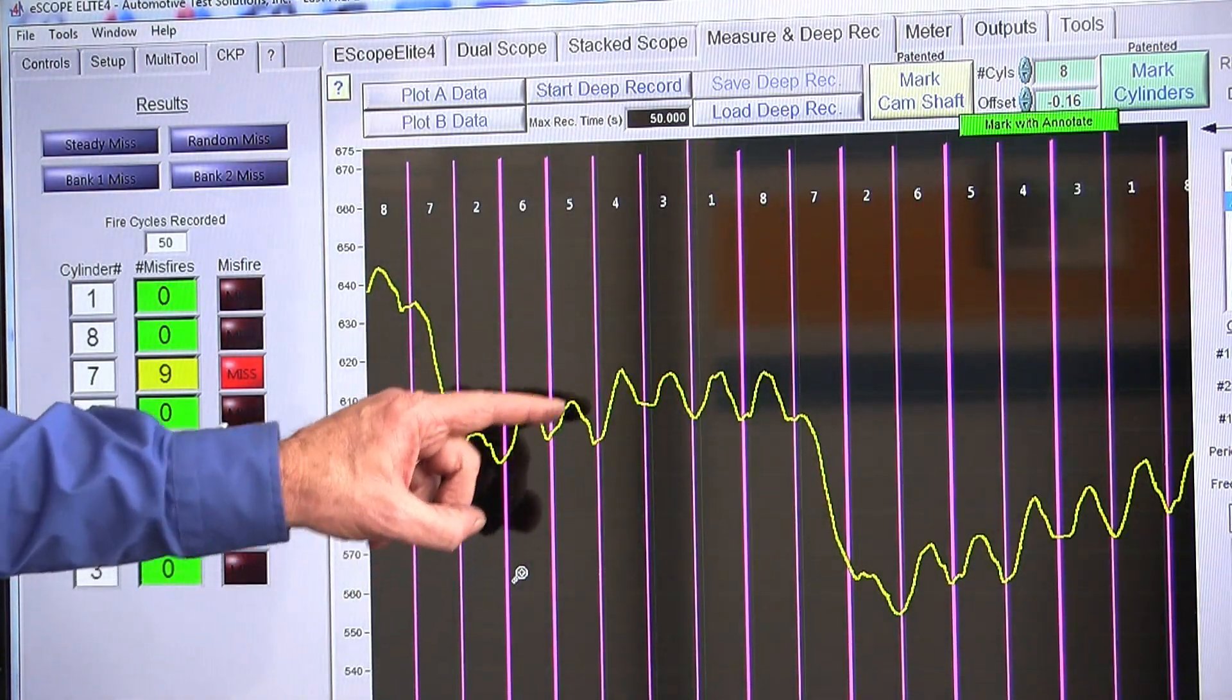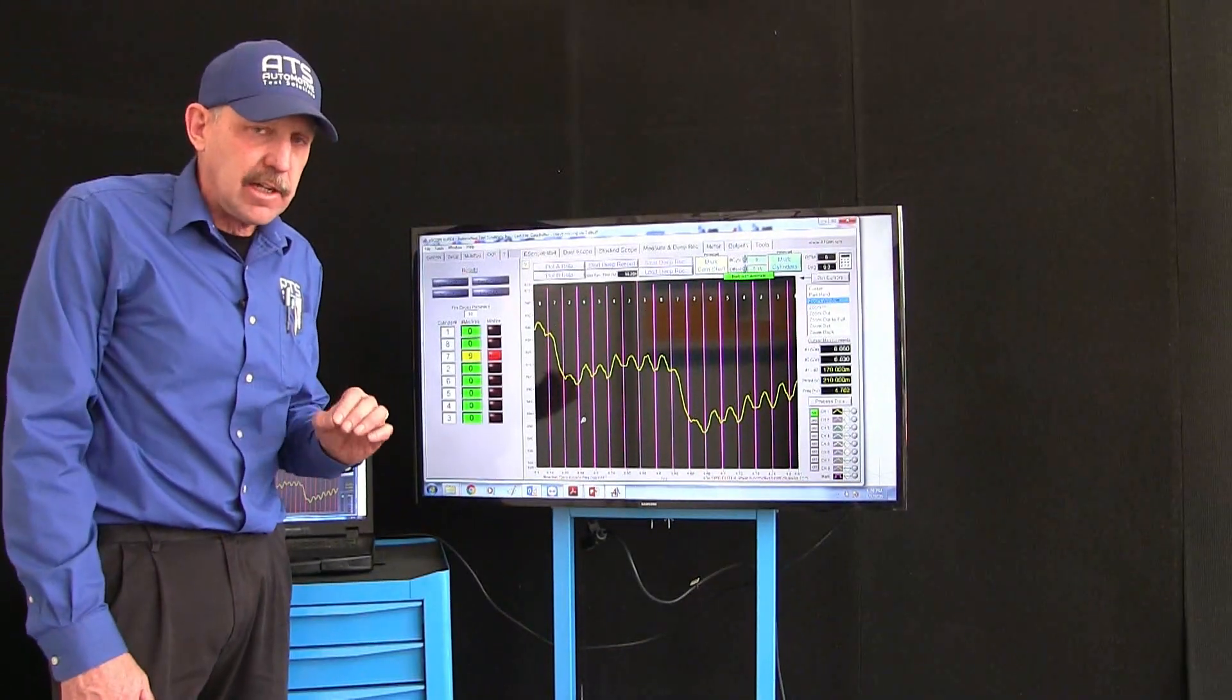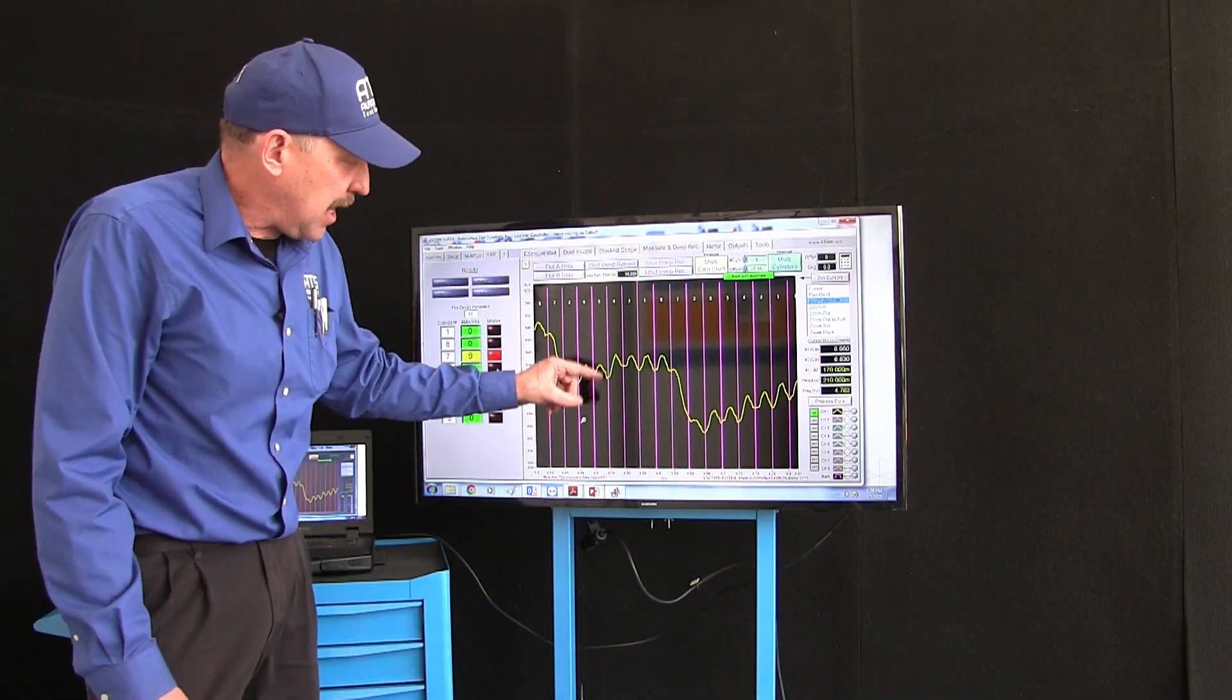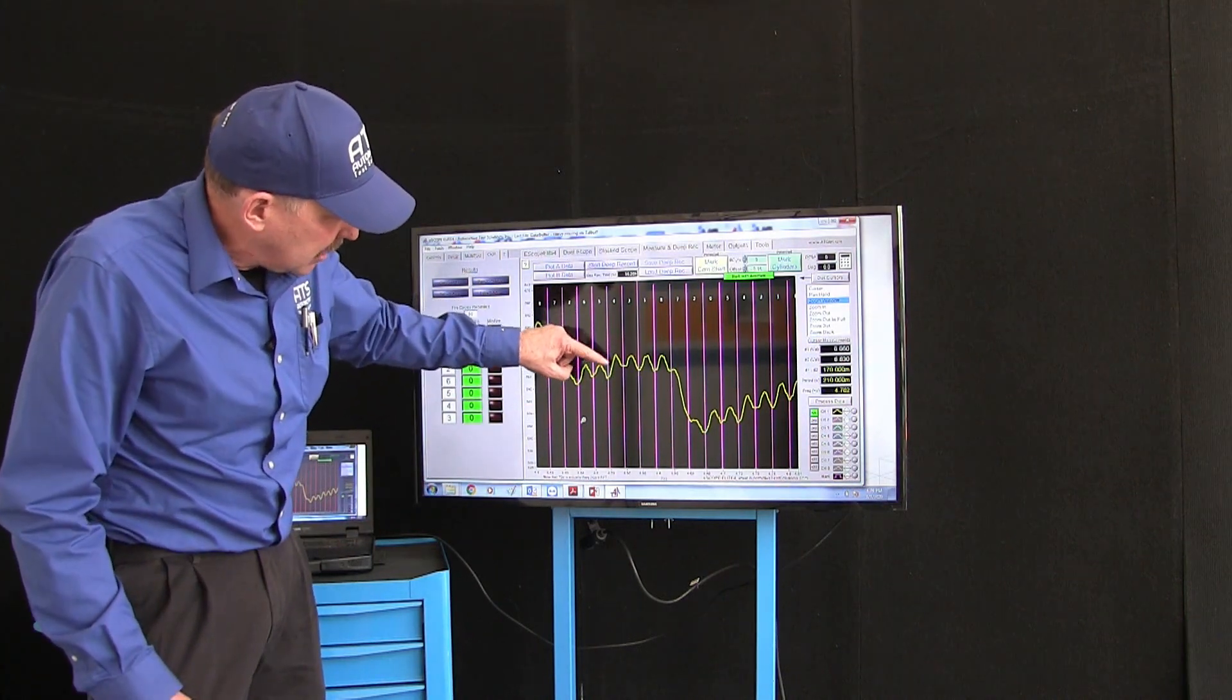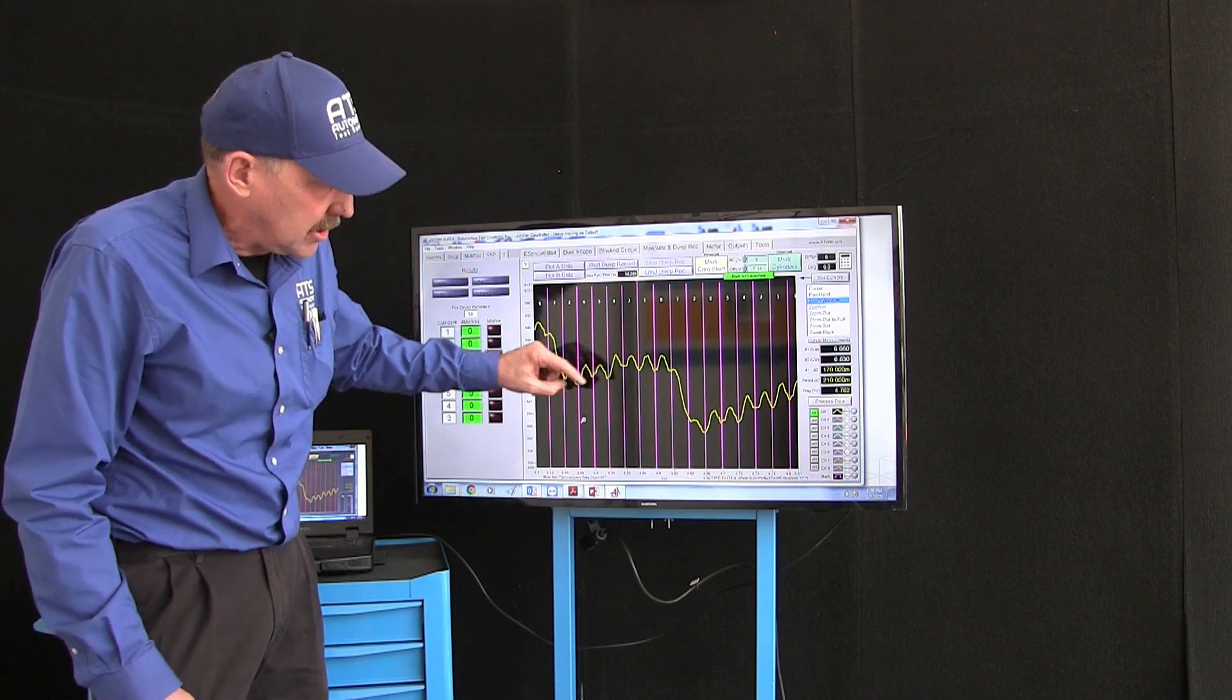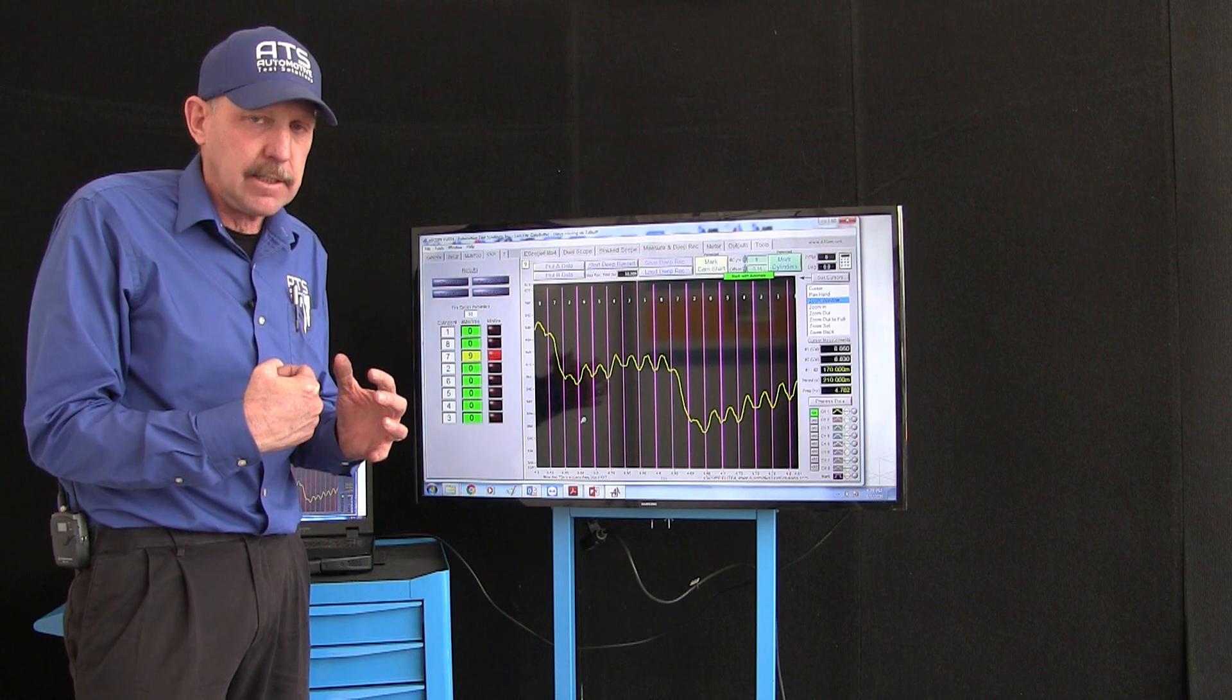Now we have these ripples and these ripples are actually the crankshaft velocity changes. Each pink mark is top dead center for that cylinder. So here we came to top dead cylinder and the piston slowed down because it's compressing the gas space within that cylinder.